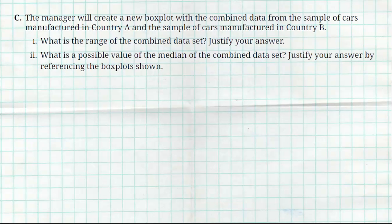All right, Part C was a two-part question. They want us to, once again, the manager was going to create a new box plot combining all of the gas mileages together, so putting Country A and Country B together. First question is, what is the range of that combined data set, and then the second part is, what would the approximate median be? Now, let's talk about the range.